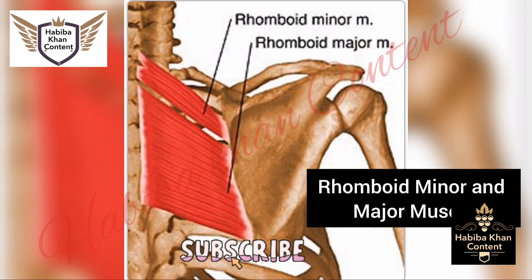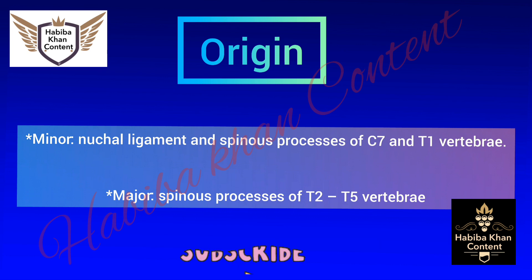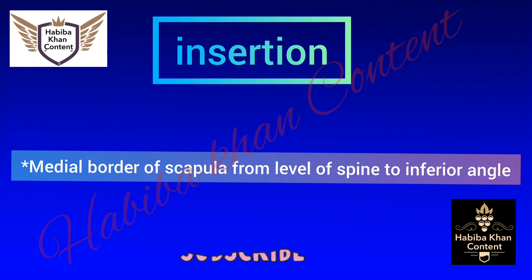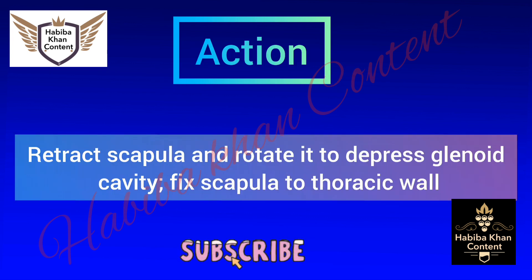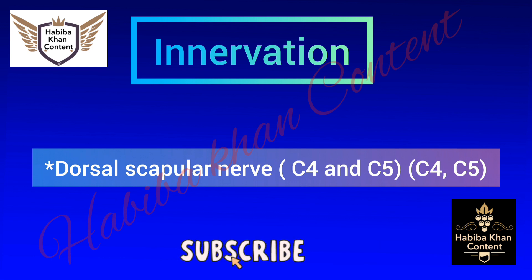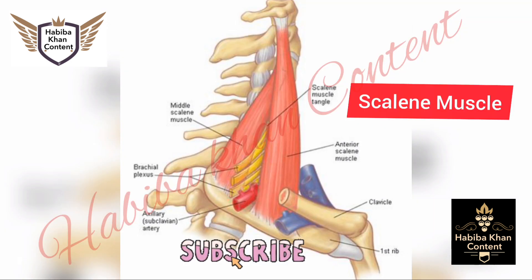Rhomboid minor and major muscles. Minor origin: nuchal ligament and spinous processes of C7 and T1 vertebrae. Major origin: spinous processes of T2 to T5 vertebrae. Insertion: medial border of scapula from level of spine to inferior angle. Action: retracts scapula and rotates it to depress glenoid cavity; fixes scapula to thoracic wall. Innervation: dorsal scapular nerve C4 and C5. Arterial supply: dorsal scapular artery.